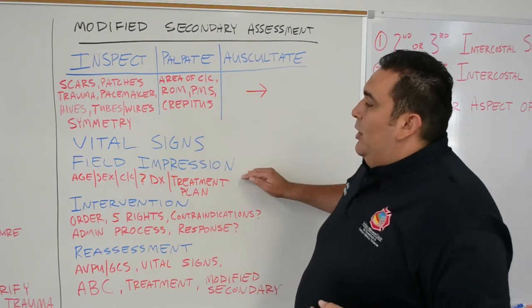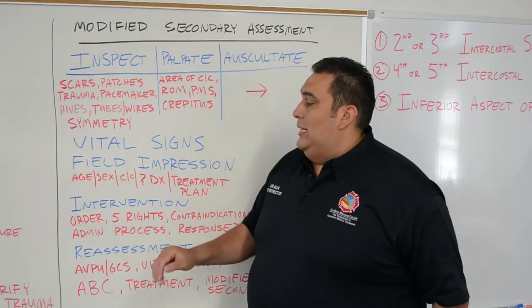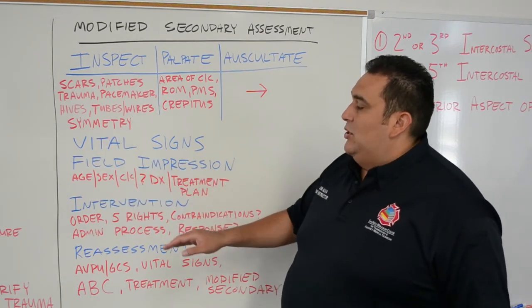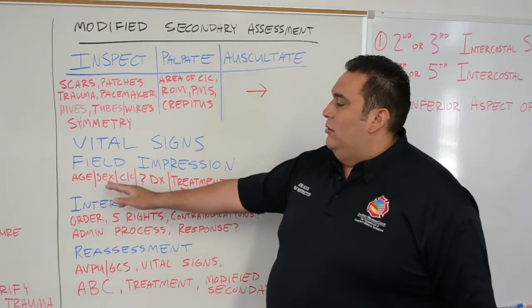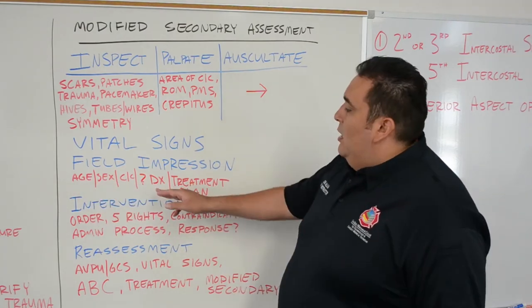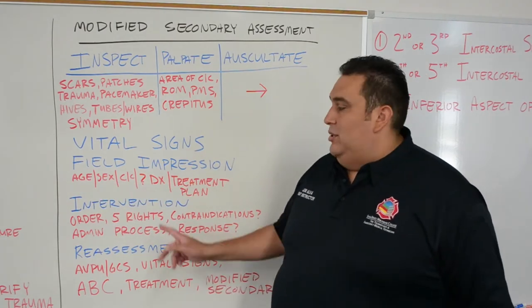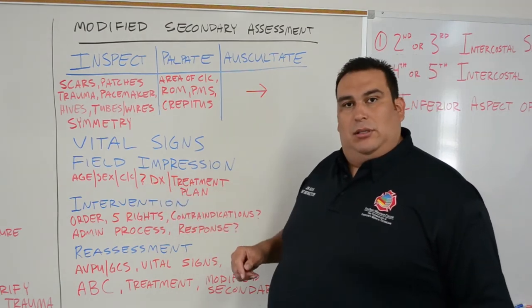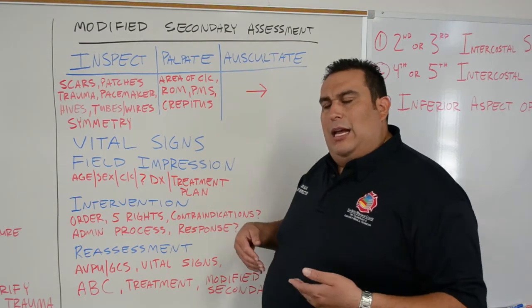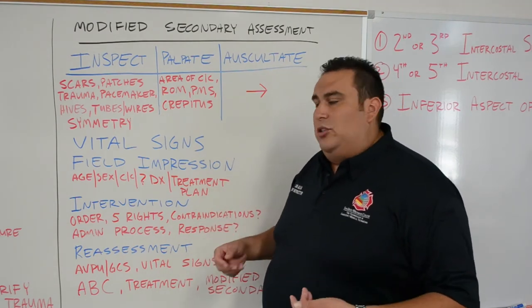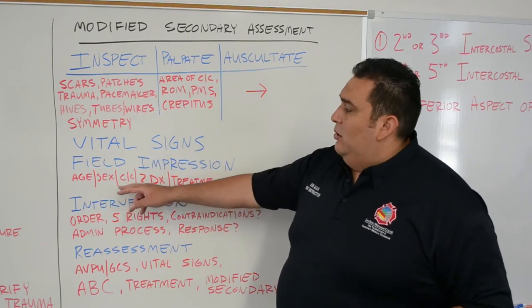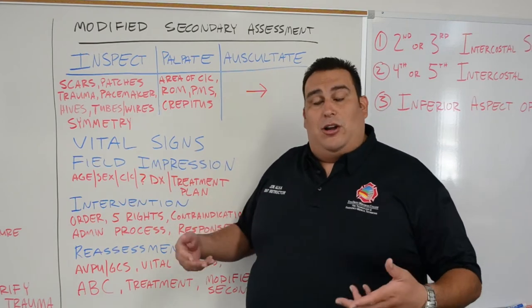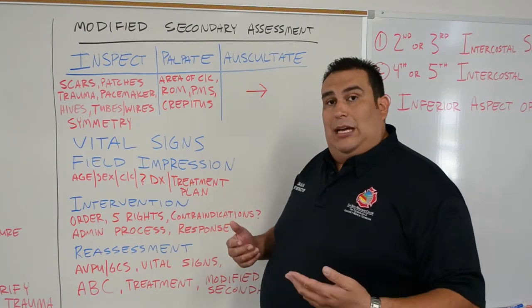Your field impression: you're going to state the patient's age, their sex, and chief complaint. So for example, a 90-year-old male with chest pain. My possible working diagnosis — DX means diagnosis, the question mark means possible. We have to come up with an unofficial diagnosis. My 90-year-old male with chest pain — I believe this patient is having some type of cardiac event, some type of cardiac compromise.